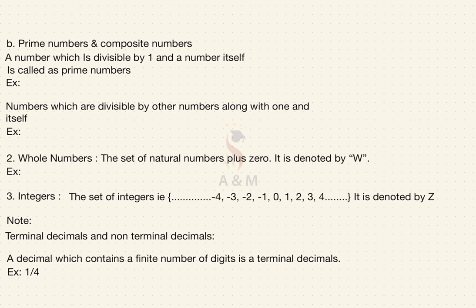Next category under natural numbers is prime number and composite number. A number which is divisible by 1 and the number itself is called a prime number. Examples of prime numbers are 2, 3, 5, 7, 11, etc. Let me take 3 as an example. 3 is divisible by 1 — one 3 is 3 — and divisible by 3 itself — three 1s are 3. Other than these two, 3 is not divisible by any other number. Therefore 3 is considered a prime number.